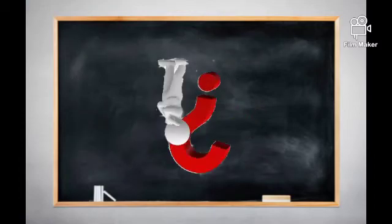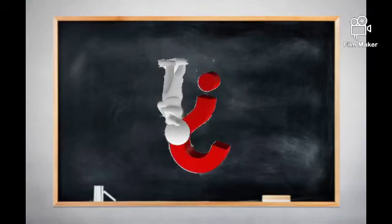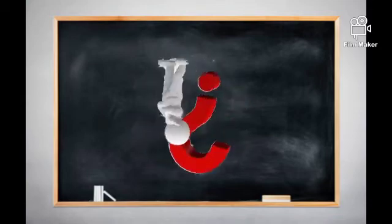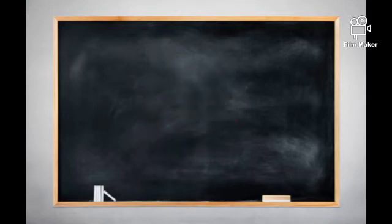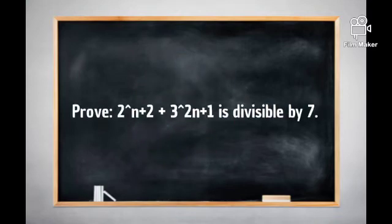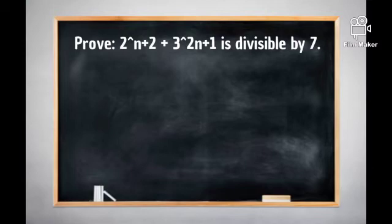Since we already have knowledge about using the well-ordering principle in proof, we can now answer the given statement. Proof: 2 to the power of n+2 plus 3 to the power of 2n+1 is divisible by 7.